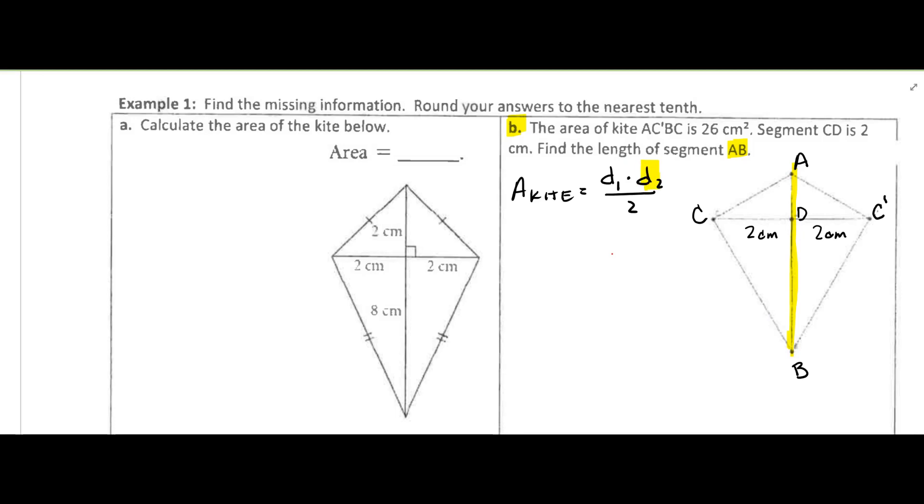Let's go ahead and substitute in everything we know. The area of the kite is given as 26 centimeters squared, so 26 is equal to...